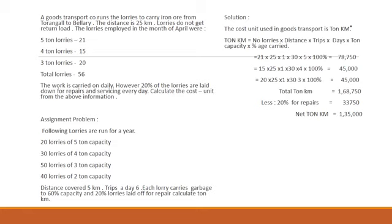We shall calculate ton-kilometers for the 21 lorries. Applying the formula: number of lorries 21 × distance 25 kilometers × trips 1 × days 30 × ton capacity 5 × percentage carried 100% = 78,750 ton-kilometers for the 21 lorries.